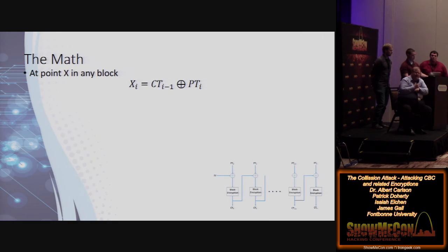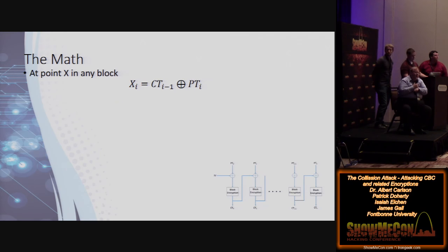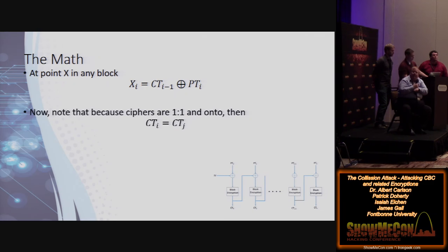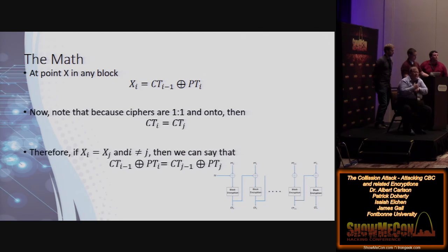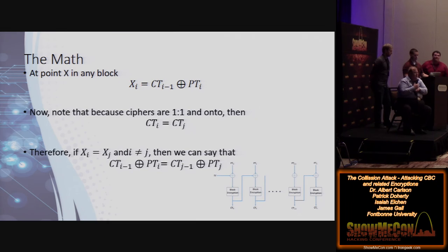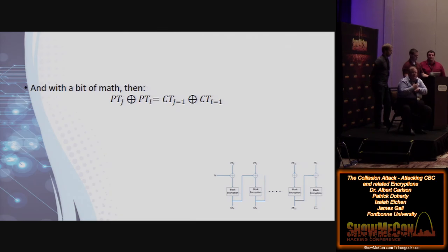Let's do a little math here. We can say that for any of those points X, X_i is equal to CT(i-1) — the ciphertext from the stage before it — XORed with the plaintext of that particular block. So we know that if X_i equals X_j, we're going to get CT_i equal to CT_j. And further, with just a little bit of substitution: CT(i-1) XOR PT_i equals CT(j-1) XOR PT_j. We've done a little bit of algebra mixed with some discrete mathematics.